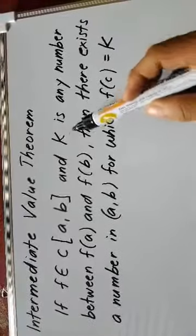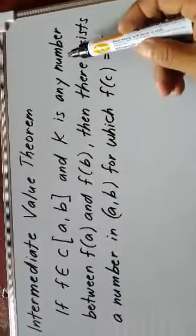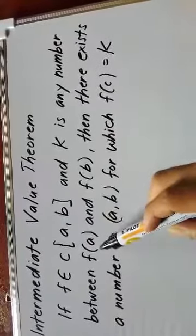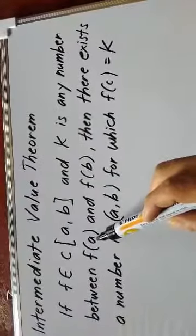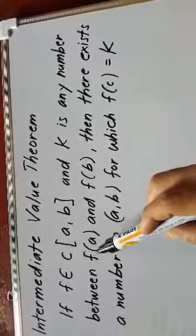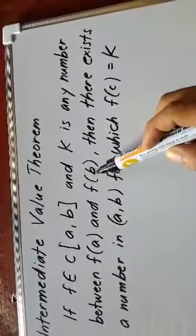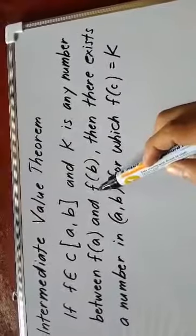This means that k is any number between f(a) and f(b). If f(a) is a number upon substitution of a into the function f, and f(b) is also a number upon substitution of b into the function f,